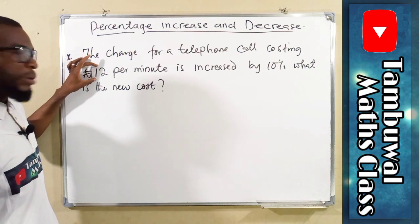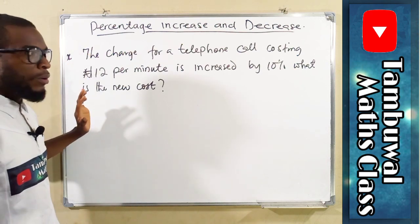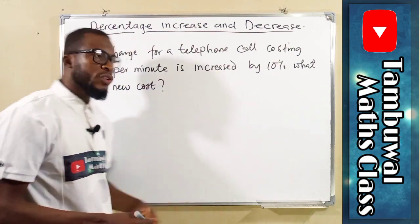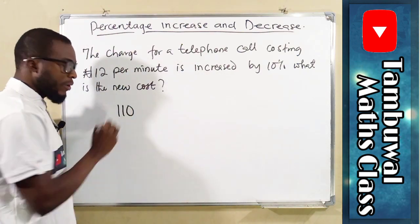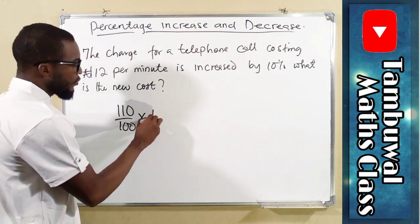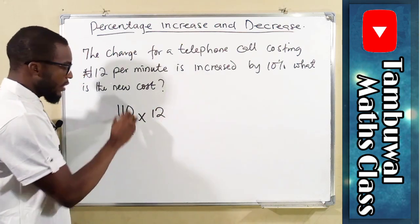Initially, this is what is charged per minute, 12 Naira, and later on increased by 10%. We want to find the new cost. So we have 110, collectively, out of 100, times 12. This will cancel this.